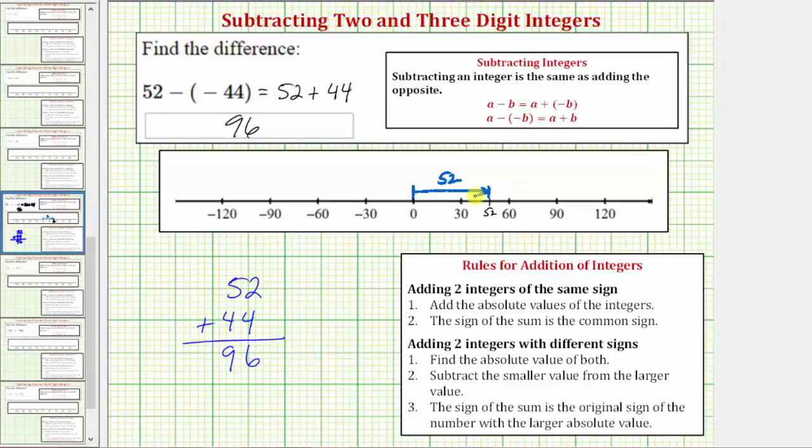And then because we're adding positive 44, we move right another 44 units to 96.